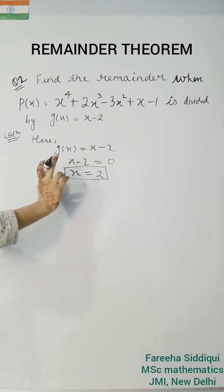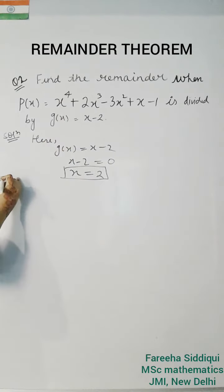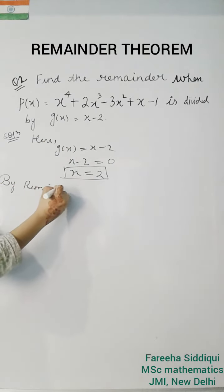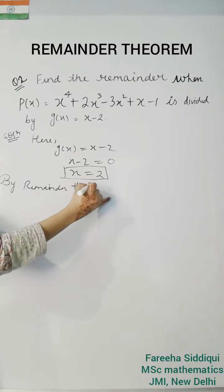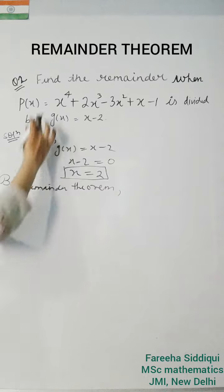Now remainder theorem. In remainder theorem we put this value 2 in given polynomial. So we will write by remainder theorem, our remainder will be P of 2.